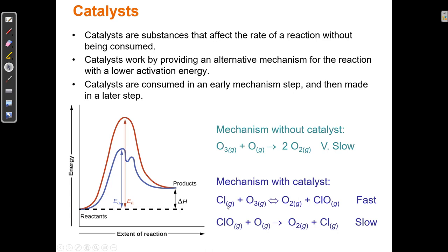However, when halogen atoms get into the upper atmosphere — like chlorine, iodine, fluorine, or bromine — these halogen atoms can react with O3 even better than oxygen can. So Cl reacts with O3 and it makes ClO very, very fast. This is the first step. Then in the next step, the ClO reacts with another O and I make O2, and the Cl comes back.